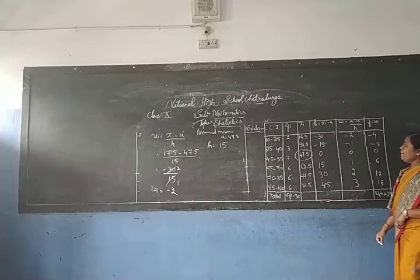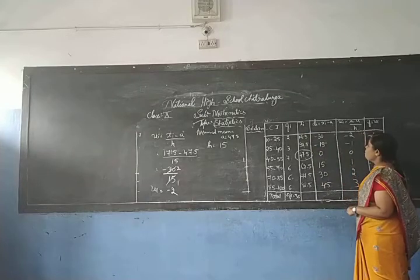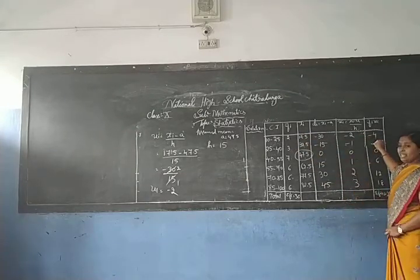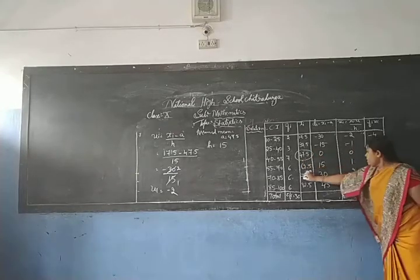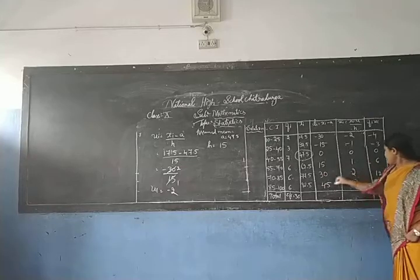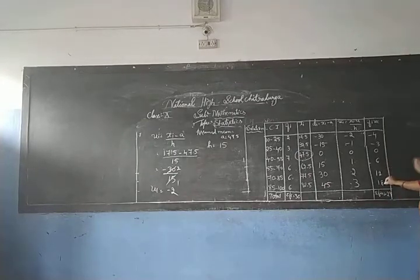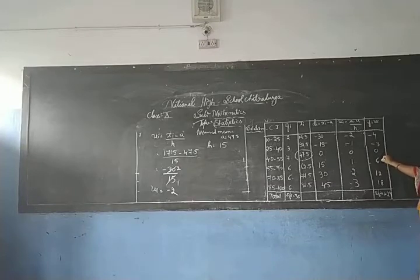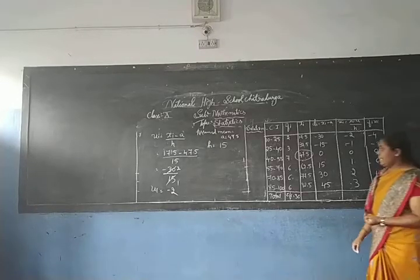Once we have the ui values, we multiply each by the corresponding frequency fi to get fi × ui: 2 × (minus 2) = minus 4, 3 × (minus 1) = minus 3, 7 × 0 = 0, 6 × 1 = 6, 6 × 2 = 12, 6 × 3 = 18. Adding these: 12 + 18 = 30, 30 + 6 = 36, 36 minus 7 = 29. So sigma fi × ui = 29.